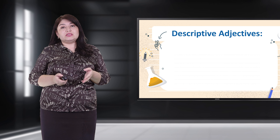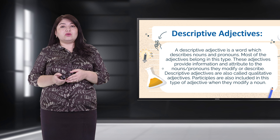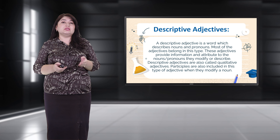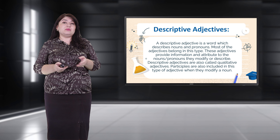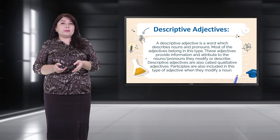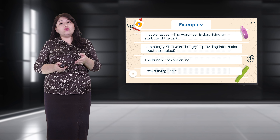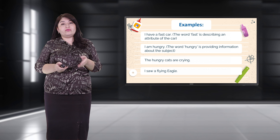Descriptive adjectives are words which describe nouns and pronouns. Most adjectives belong to this type. They provide information and attributes to the nouns or pronouns they modify. Descriptive adjectives are also called qualitative adjectives. Participles are also included in this type when they modify a noun. For example: 'I have a fast car' — the word 'fast' describes an attribute of the car. 'I am hungry' — 'hungry' provides information about the subject.